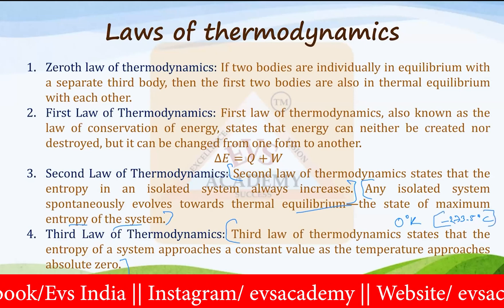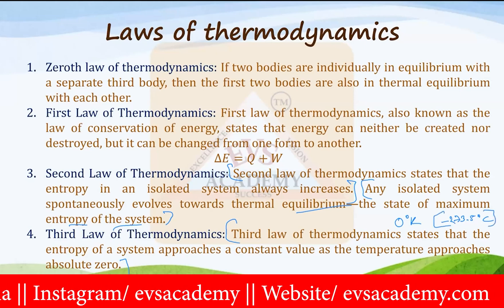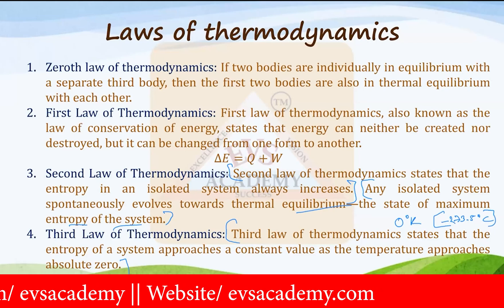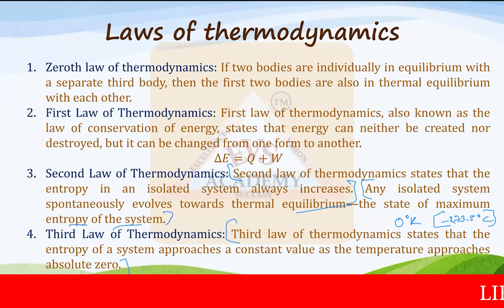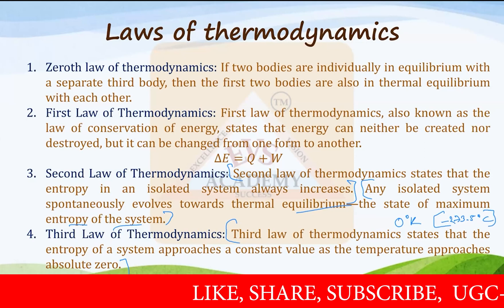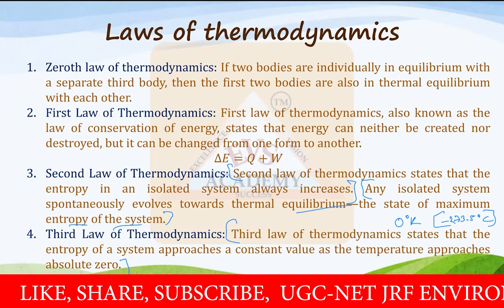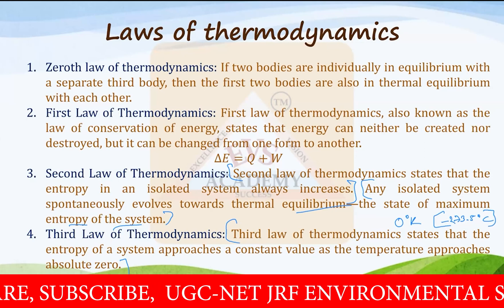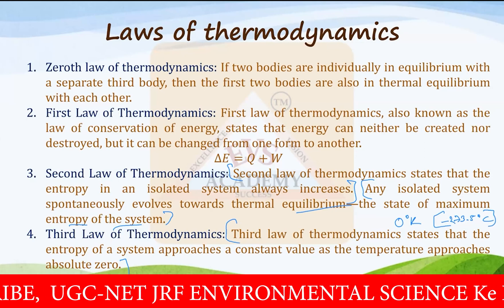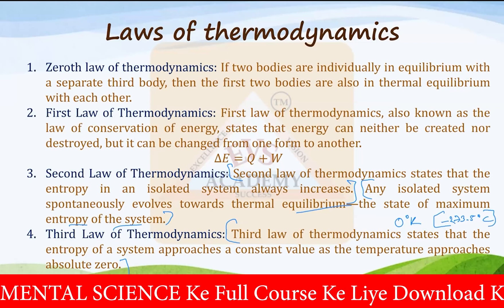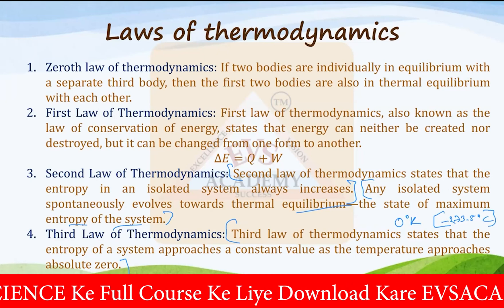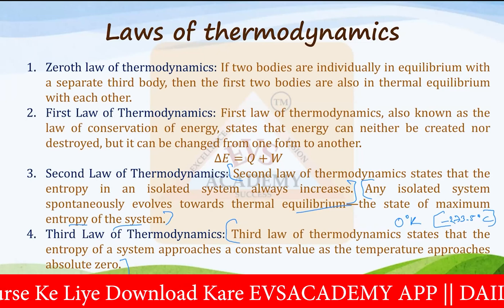Achieving absolute zero temperature is impossible so far. A few bodies have recently been found at minus 272 degrees Celsius, but not minus 273.5 degrees Celsius. Just as we cannot reach the speed of light, we cannot reach this temperature either — theoretically and practically, it is almost impossible, though perhaps achievable in the future.